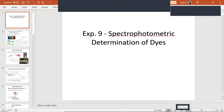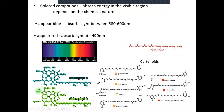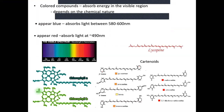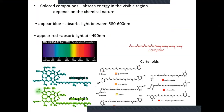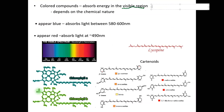Experiment nine deals with the spectrophotometric determination of dyes. Dyes are colored compounds, and the unique thing about colored compounds is that they absorb energy in the visible region. The visible region is anywhere from 400 to about 700 nanometers — the 400 nanometer range is more of your violet-blue light, and the 700 nanometer range is more of your red light.